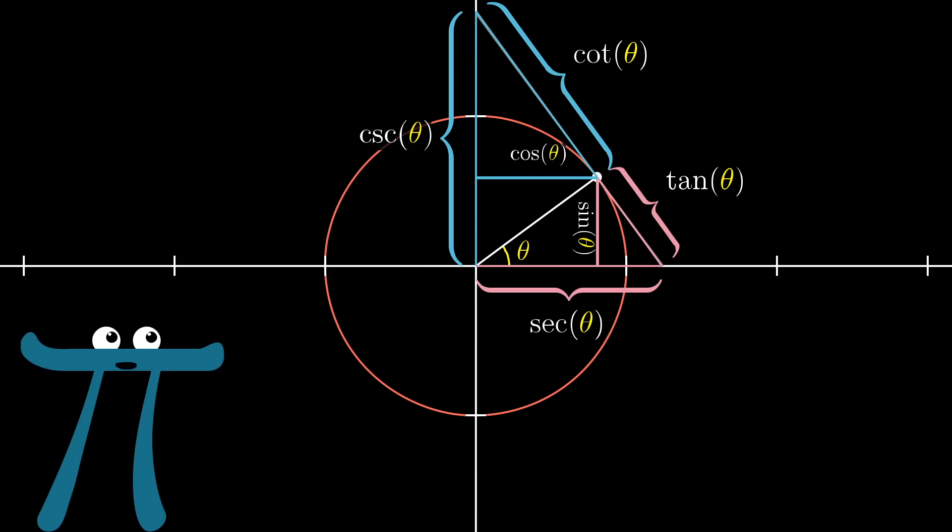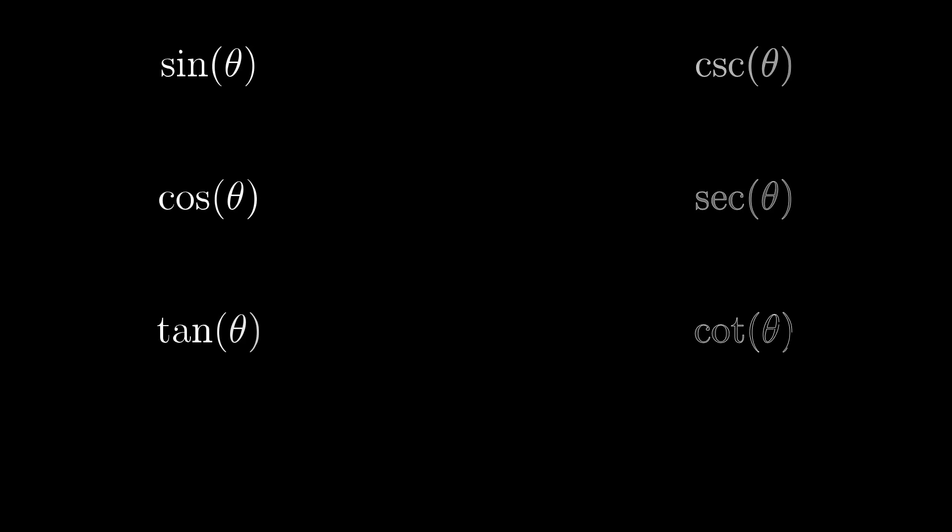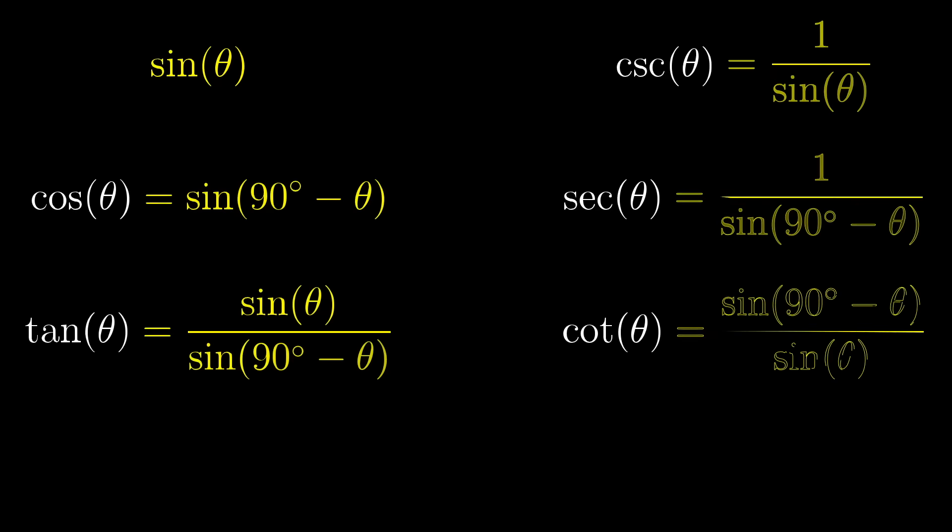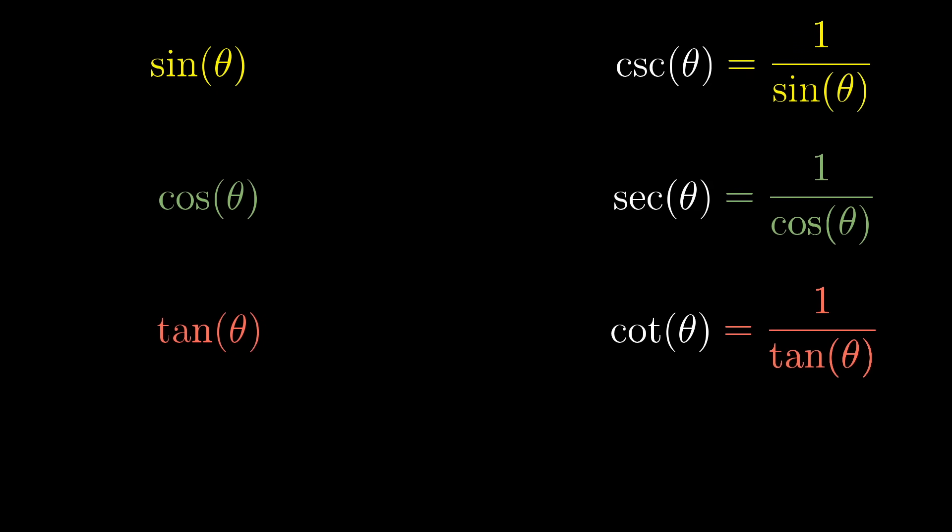But in any practical use of trigonometry, you can get by just using sine, cosine, and tangent. In fact, if you really wanted, you could define all six of these in terms of sine alone. But the sort of things that cosine and tangent correspond to come up frequently enough that it's more convenient to give them their own names.